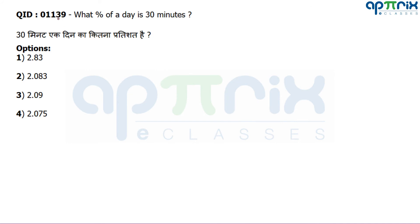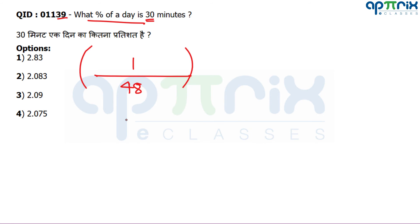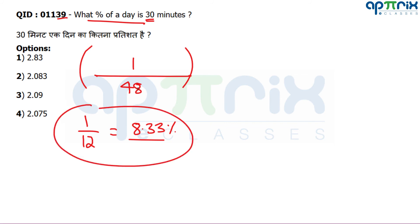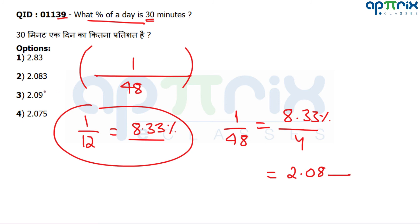Question number 39: What percentage of a day is 30 minutes? 30 minutes = half an hour. A day = 24 hours. So we need 1/48 as a percentage. We know 1/12 = 8.33%. So 1/48 = 8.33% ÷ 4 = approximately 2.08%. Only one option matches around 2.08%, so mark that without full calculation.